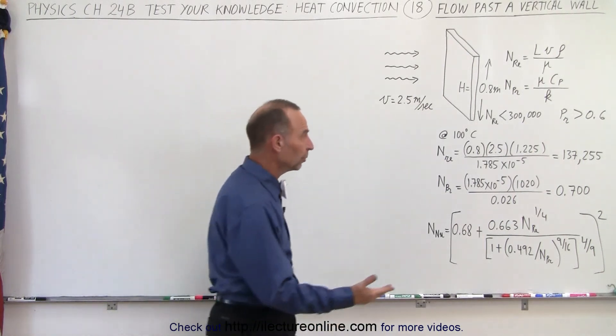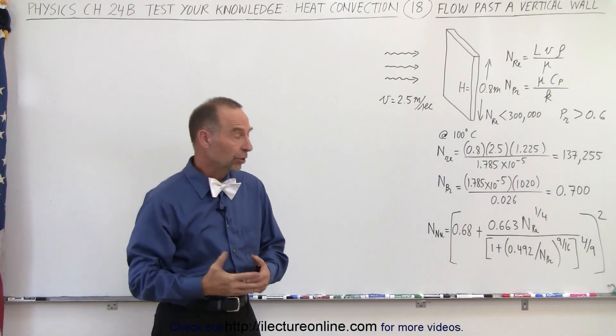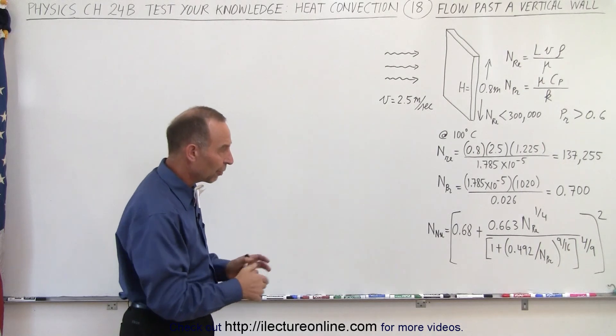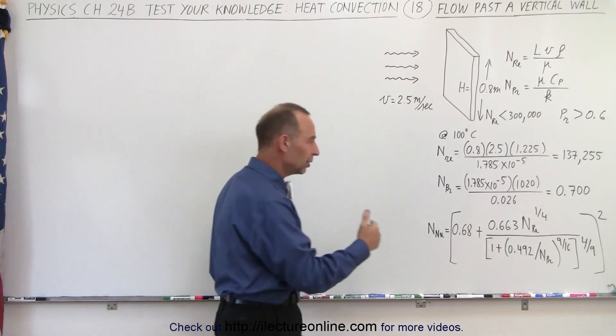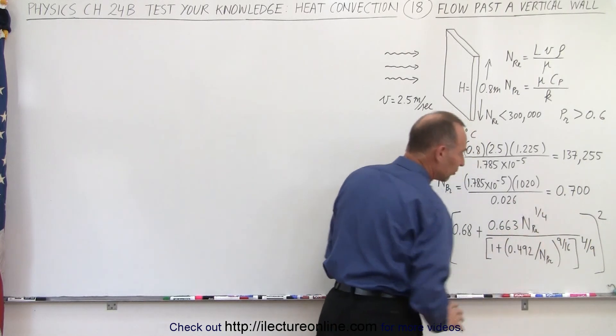We come up with some reasonable values for the Reynolds number and the Prandtl number, but now we need the Nusselt number. You've seen some equations that looked more simplistic before, but let's take a look at this one and notice the exponents get to be quite wild.